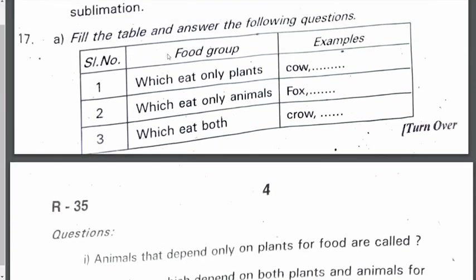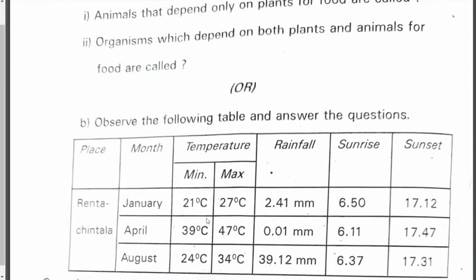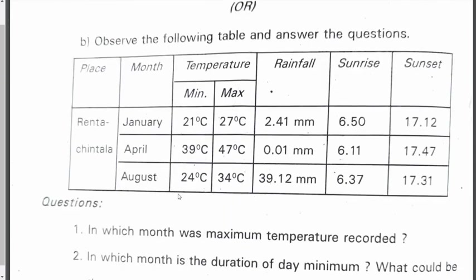Fill in the table and answer the following questions. Which animals eat only plants? Cow, etc. Which eat only animals? Fox, tiger. Which eat both? Crow and human beings. Animals that depend only on plants for food are called herbivorous animals. Organisms which depend on both plants and animals for food are called omnivores. Animals that eat only other animals are called carnivores.